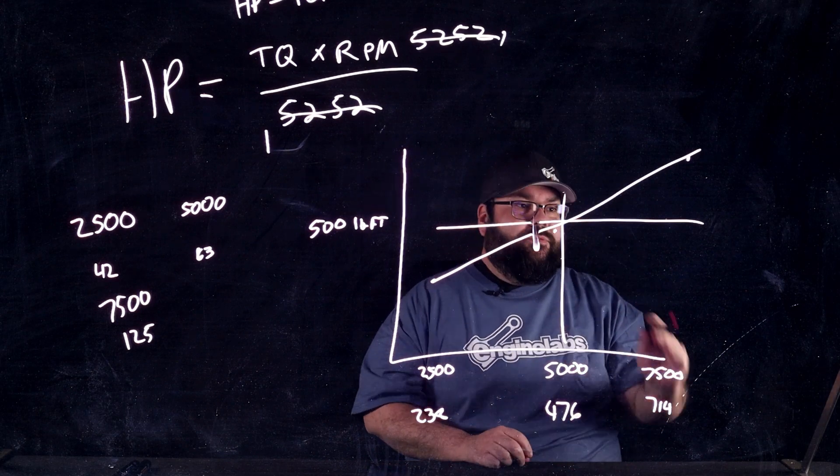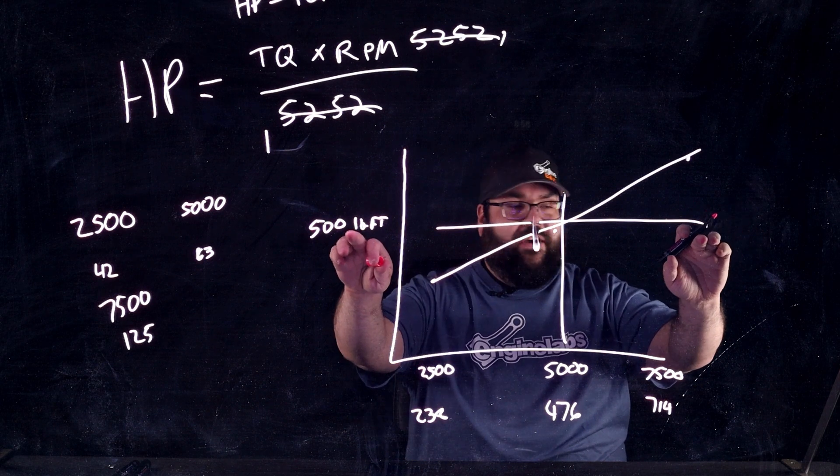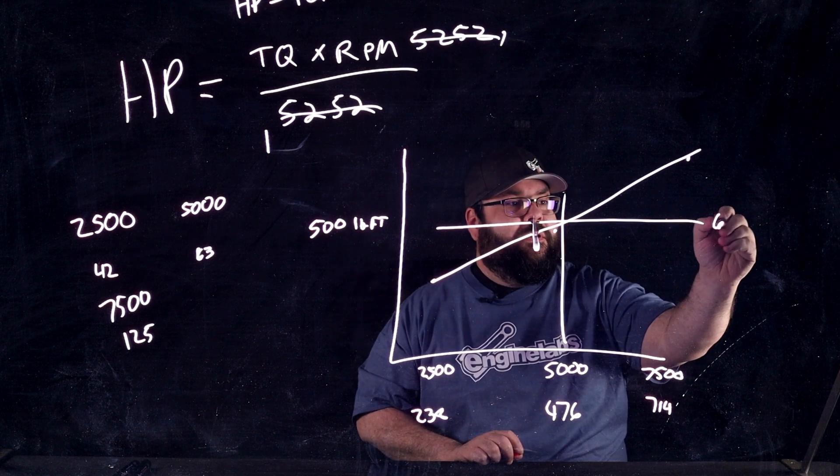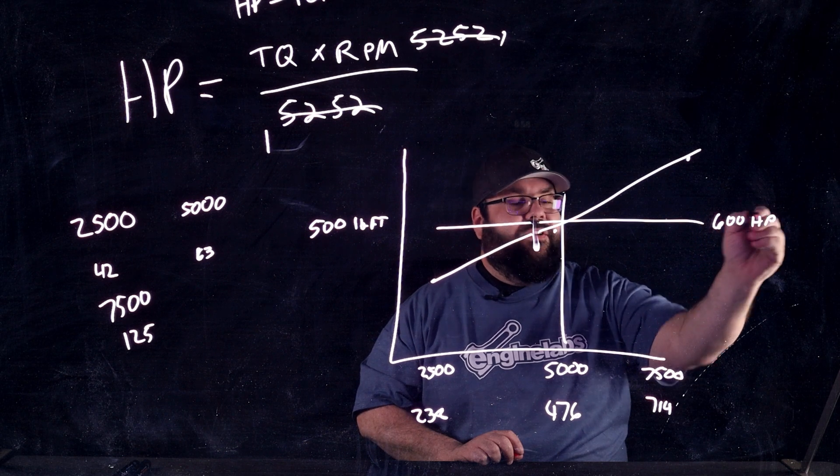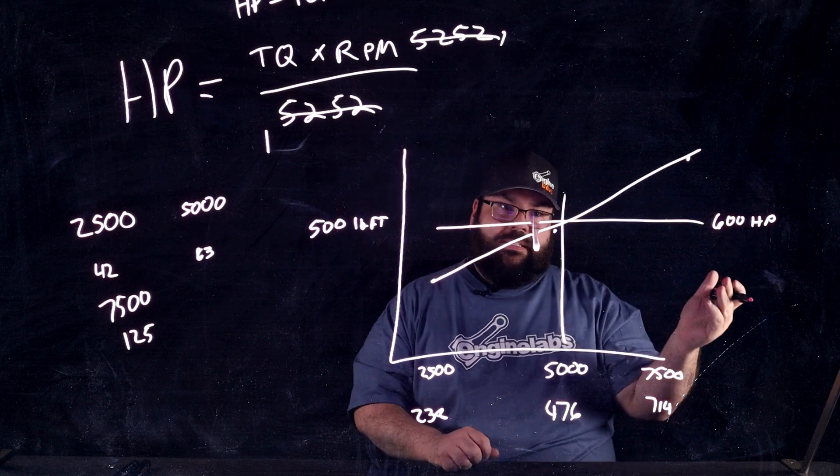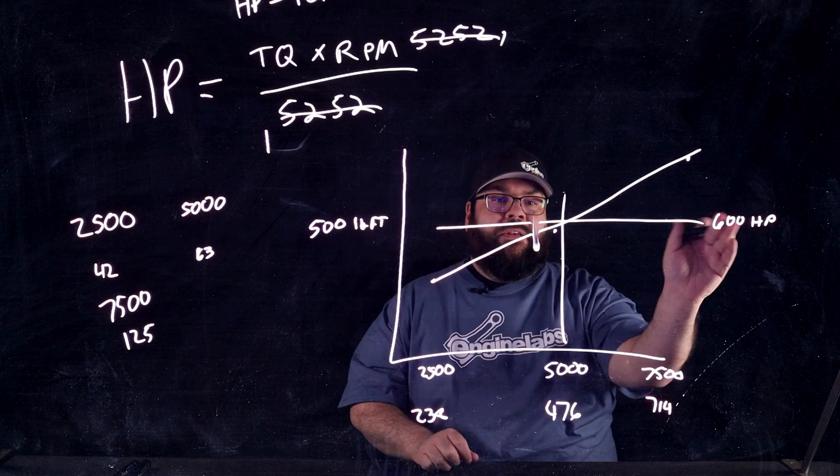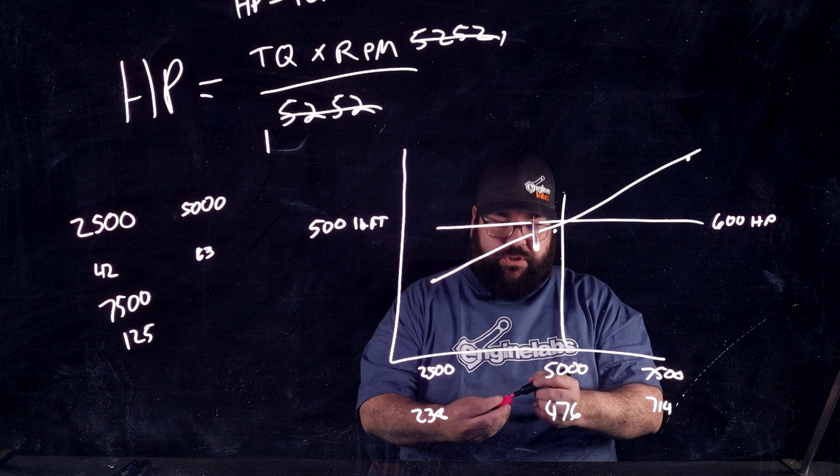Well, sometimes, some dyno charts will show, instead of this being 500, this will be 500 pound-feet, and they'll show a different scale on the right side. So, now that, if you were to true up the scales and slide this up, once again, it's going to cross at 5252.